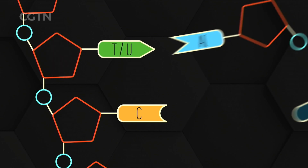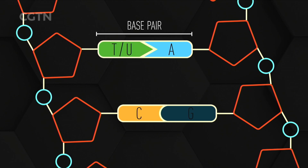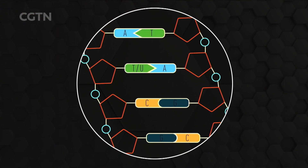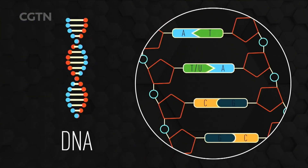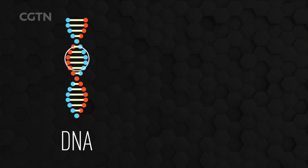Each base has a singular opposing base to which it can bond, creating what is known as a base pair. Adenine always pairs with thymine or uracil, and cytosine always pairs with guanine. In DNA, base pairs form two complete opposing strands in a twisted ladder known as a double helix.